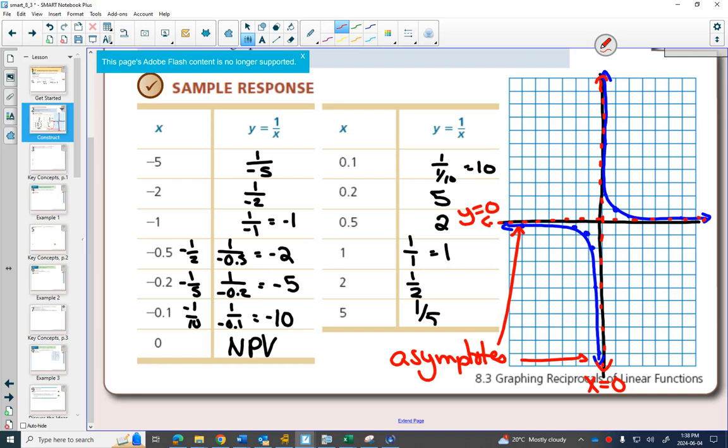The vertical one, the one that goes up and down, will always happen when you have non-permissible values. Since x can't be zero, we draw a red dotted line there saying my graph can never touch that point. It can get close to it, but it can never touch it. If you think about this equation, y equals one over x, you are not allowed to divide by zero.